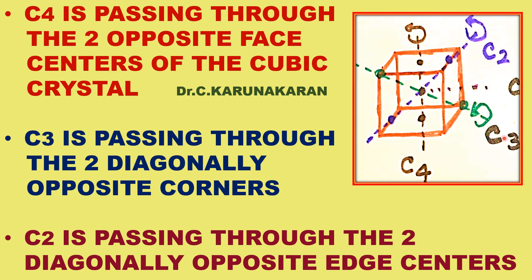C3 axis passes through diagonally opposite corner atoms. There are 8 corner atoms in a cube, so 8 divided by 2 gives four C3 axes of symmetry in cubic crystal.